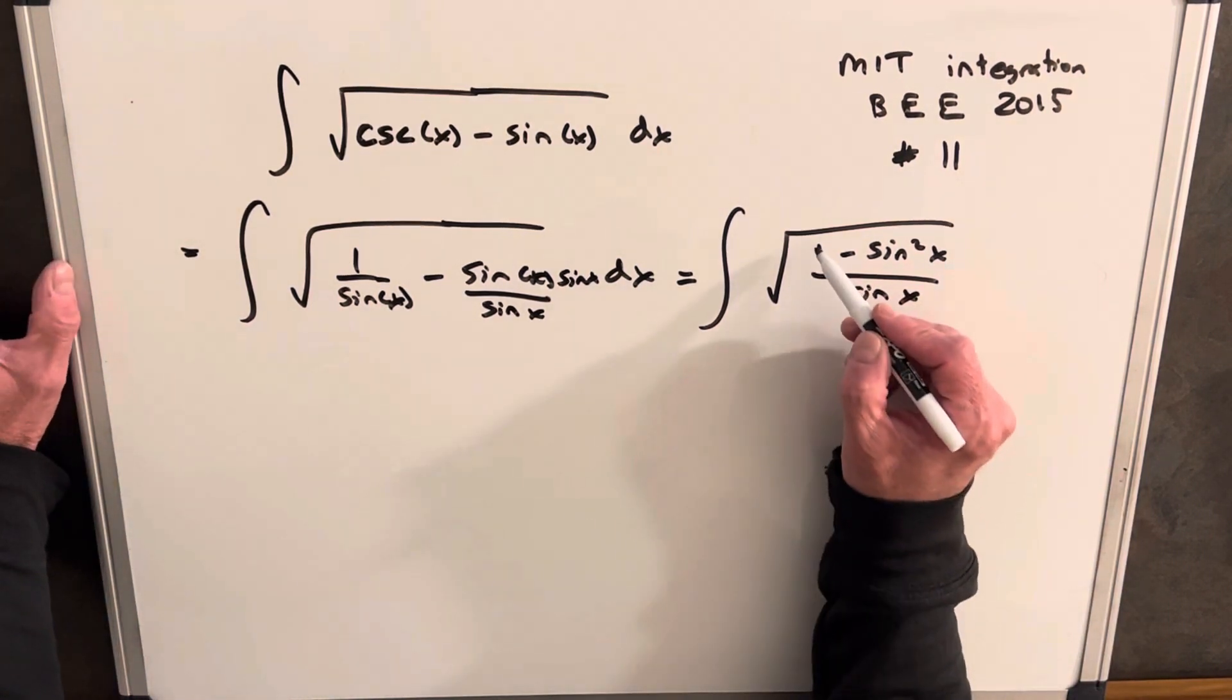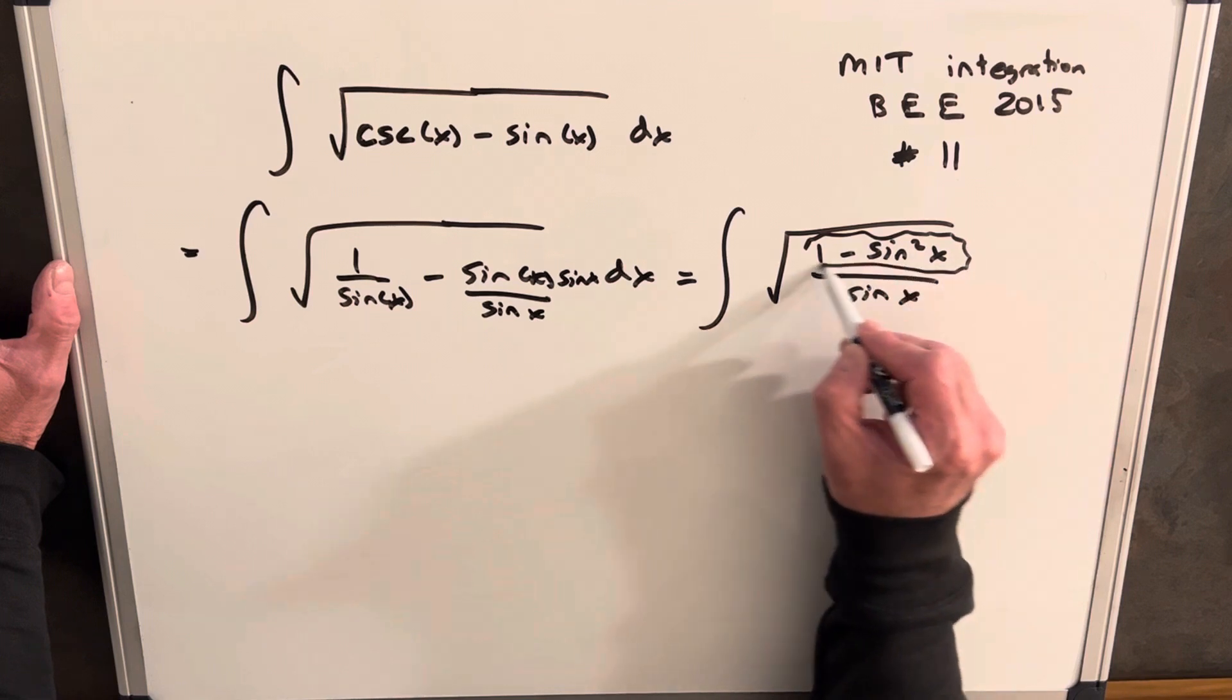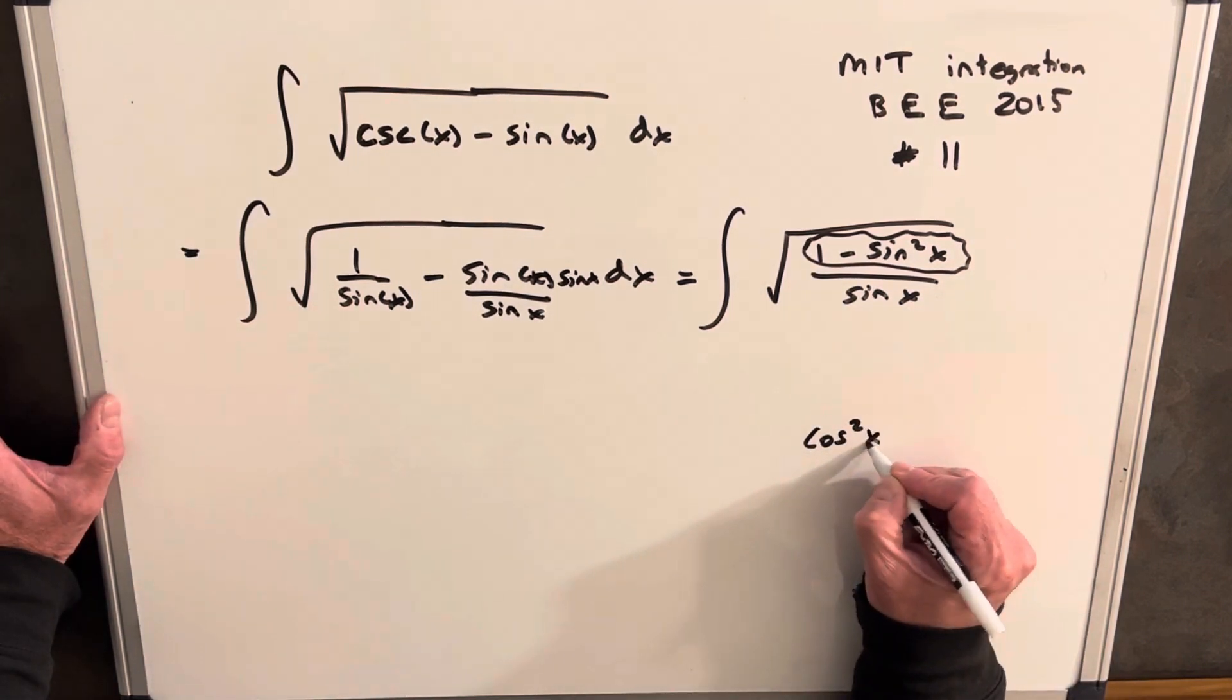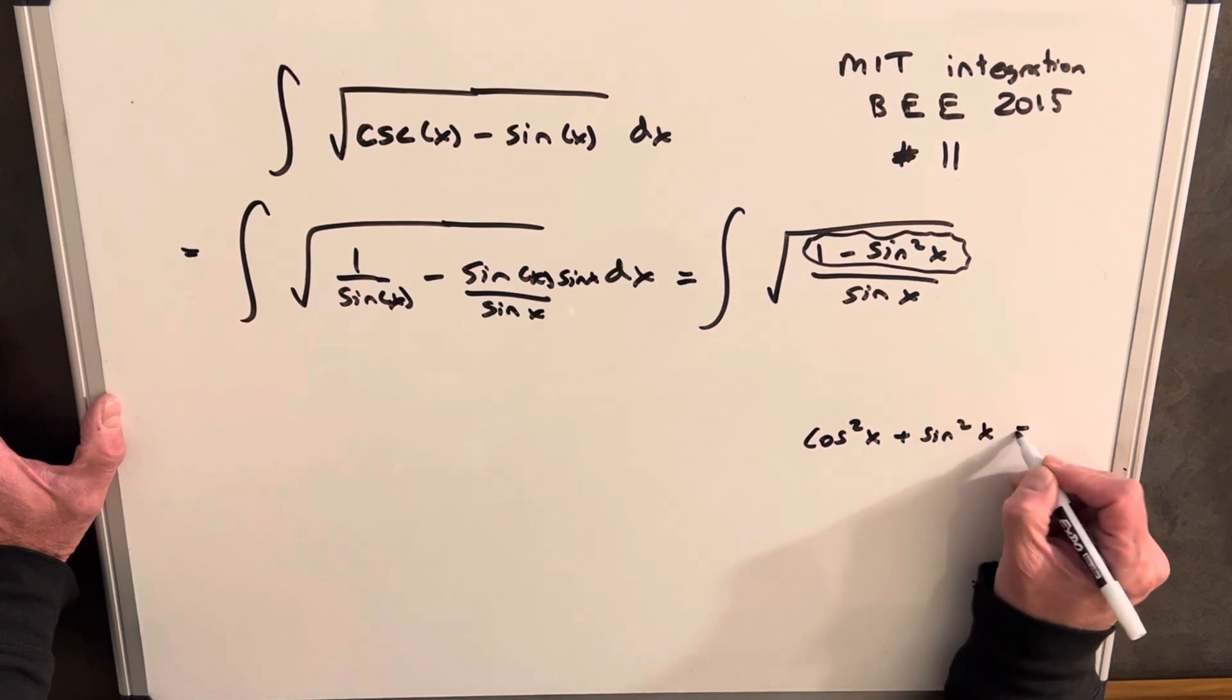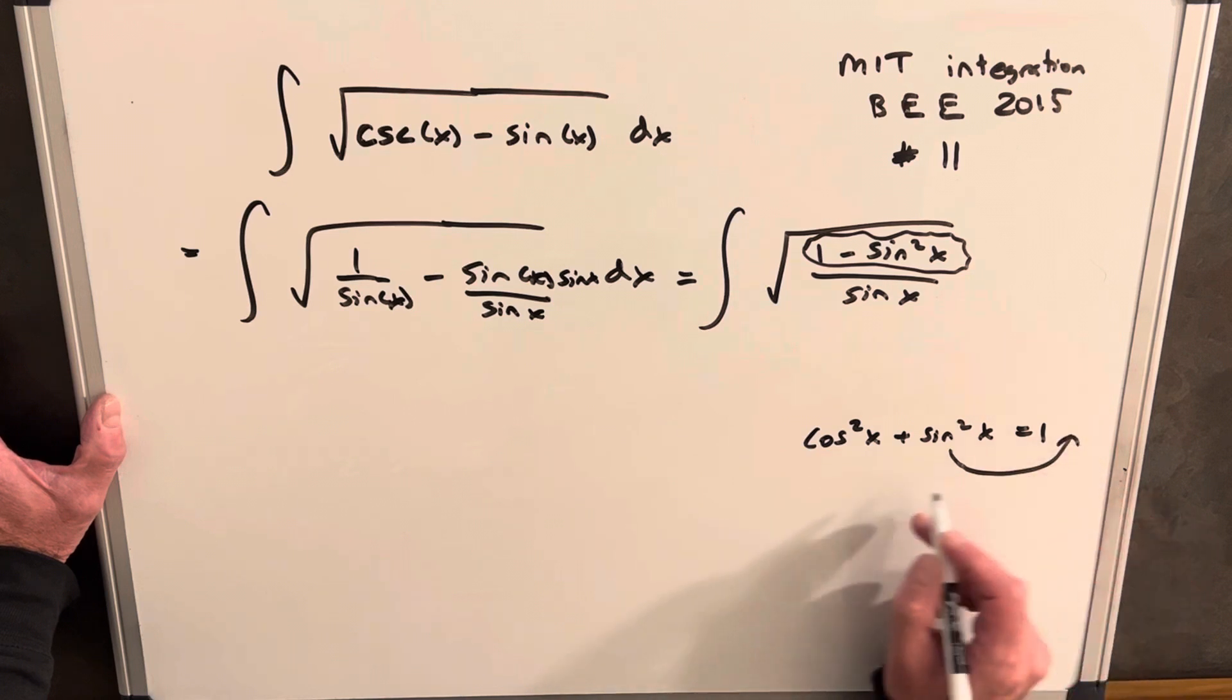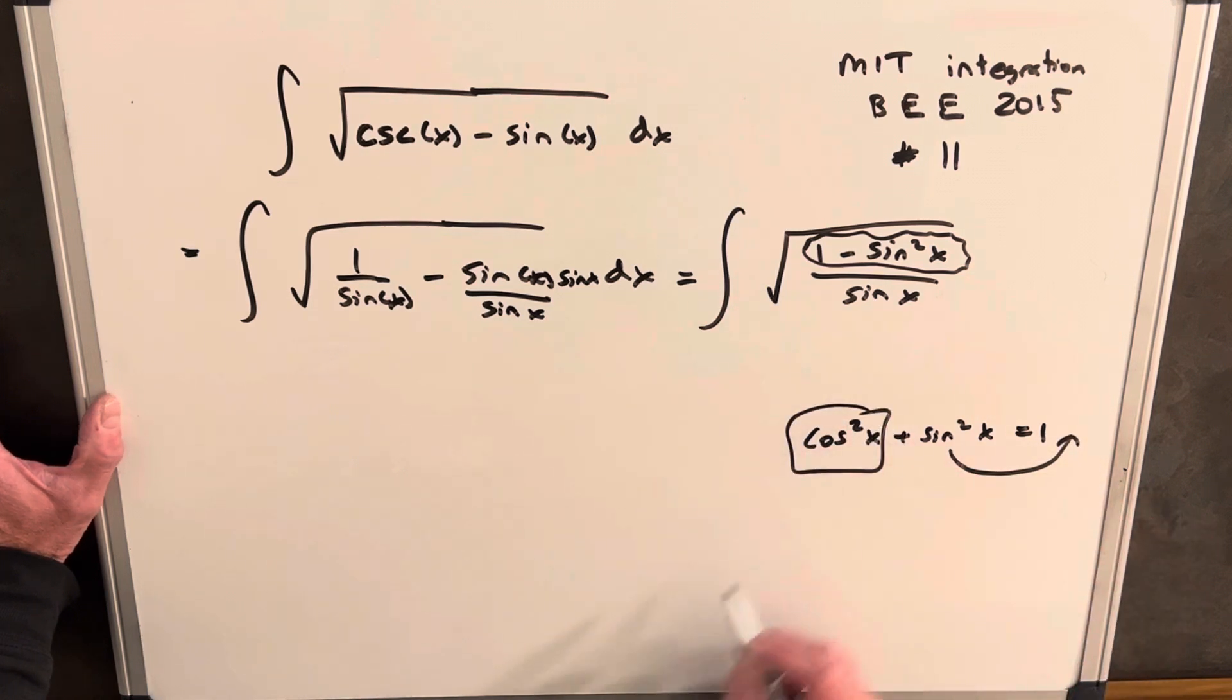And the good thing about that is this piece right here is just cosine squared, because we have this identity, cosine squared x plus sine squared x equals 1. So when you just subtract sine squared x on both sides, you get back to just cosine squared x.